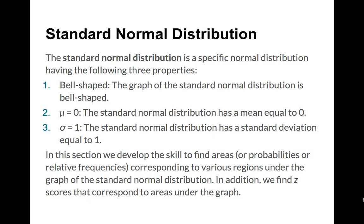Now let's move on to the standard normal distribution — a very special one. Normal distributions are what we'll focus the majority of our remaining time on. The standard normal distribution is special because of properties two and three. Property one: it's bell-shaped and symmetric, with no skewing. For a standard normal distribution specifically, the mean is zero and the standard deviation is one. We represent this as z instead of x for the random variable, because z-scores map exactly to the standard normal distribution.